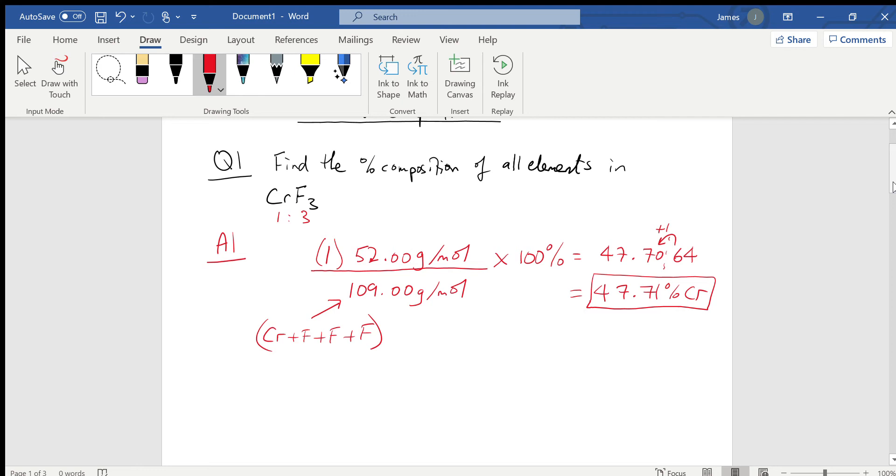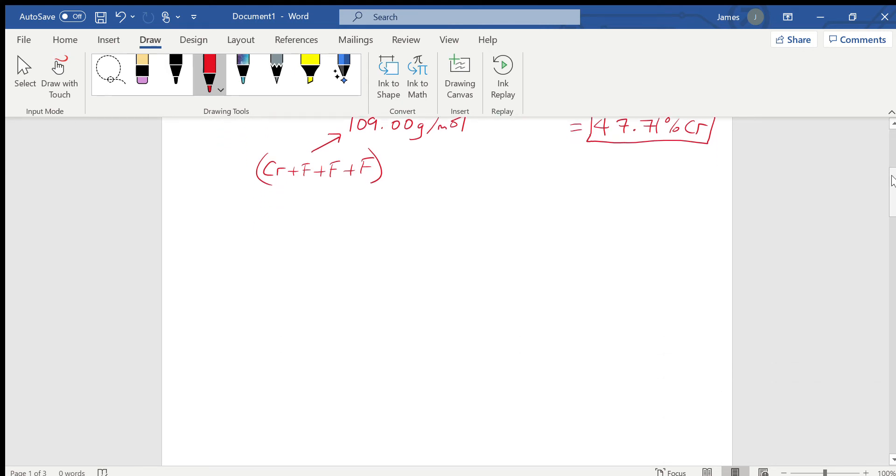That was chromium, let's do the same for fluorine. For fluorine this time I have three lots of fluorine, and fluorine has a weight of 19 grams per mole. My denominator is the same, obviously grams per mole. This gives me 52.2935. I look at this first non-significant digit, it's less than five, so it adds zero to the last significant digit. So my final answer is 52.29 percent fluorine.